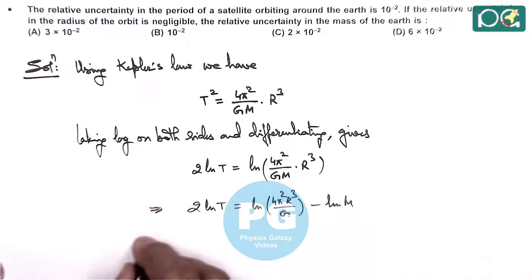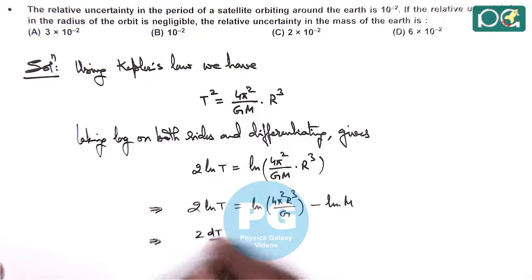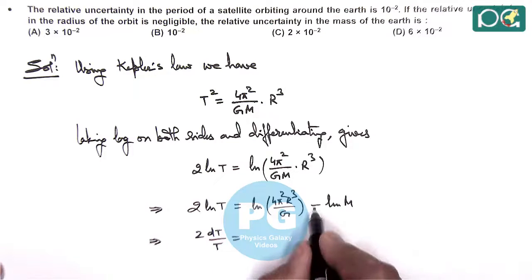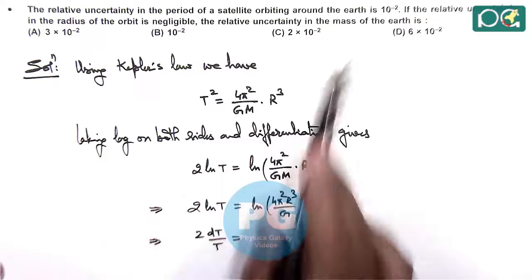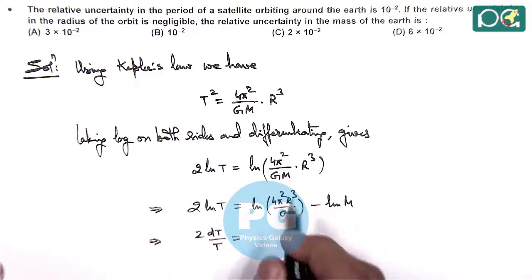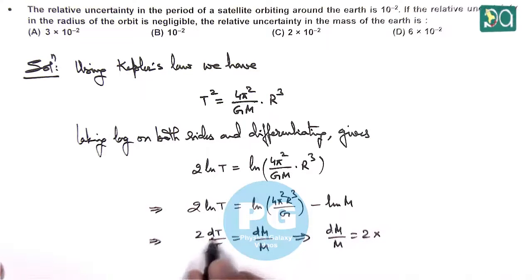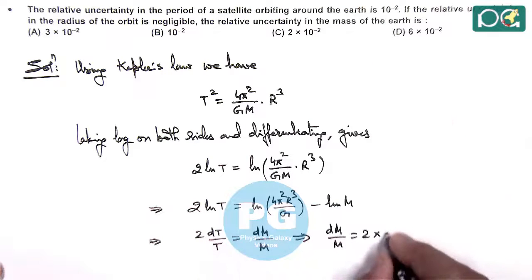If we differentiate further it gives 2 dT by T is equal to negative sign we can ignore, because we are calculating the relative uncertainty, so the maximum value of uncertainty we can calculate as dM by M. So this giving us the value of dM by M is equal to 2 multiplied by dT by T, which is the relative uncertainty in the period of satellite, this is 10 to power minus 2.